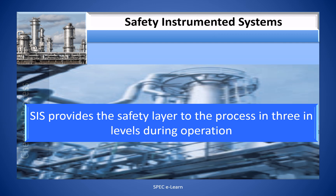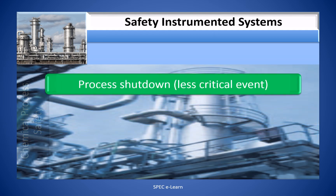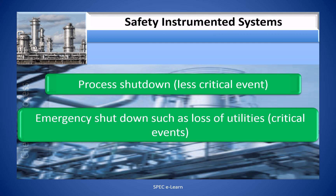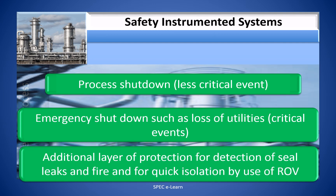SIS provides safety layers to the process in three levels during operation. One: process shut-down for less critical events. Two: emergency shut-down such as loss of utilities for critical events. Three: an additional layer of protection for detection of gas leaks and fire, and for quick isolation by use of ROVs.